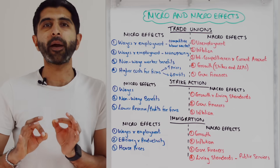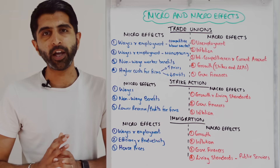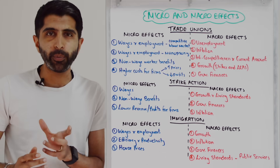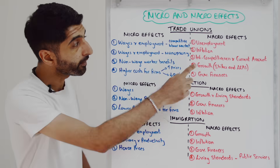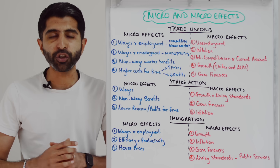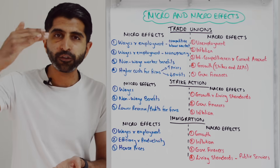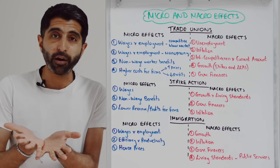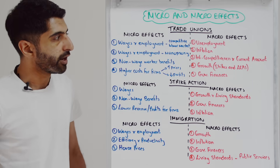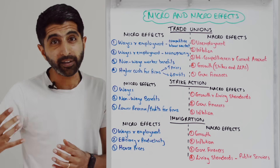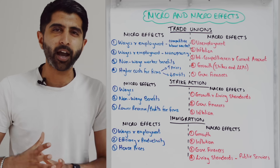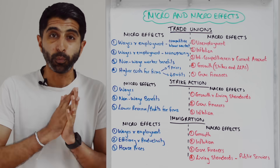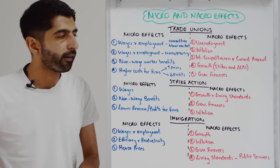On the macro side, we've already talked about the risk of higher real wage unemployment as trade unions might force wages above equilibrium in competitive labour markets, but also the risk of higher inflation as firms face higher costs and may pass on those higher costs via higher prices. Those higher prices, if that's how firms react to higher costs, can then make exports less internationally competitive, which can worsen a country's trade and current account balance.